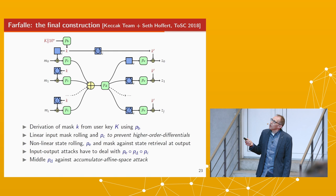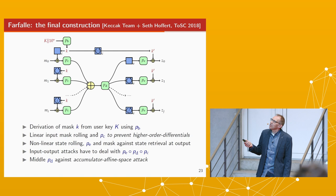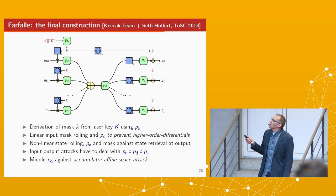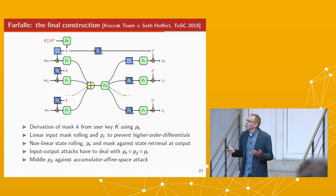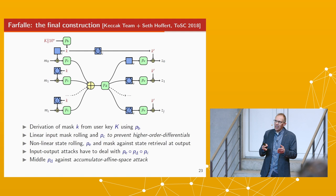There is also a rolling function in the output phase; this was initially linear but after a devastating attack discovered after we published on ePrint, we made it non-linear. This illustrates that cryptanalysis can break things, but if you discover attacks soon enough, you can adapt your scheme before final publication. The current construction has not been broken in our implementations, though you never know.